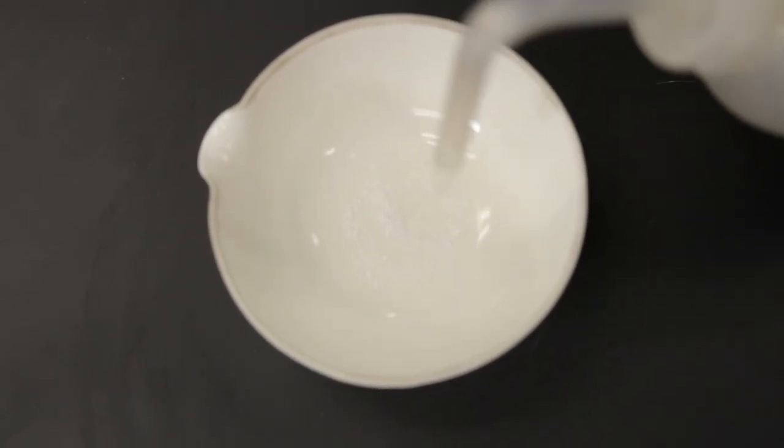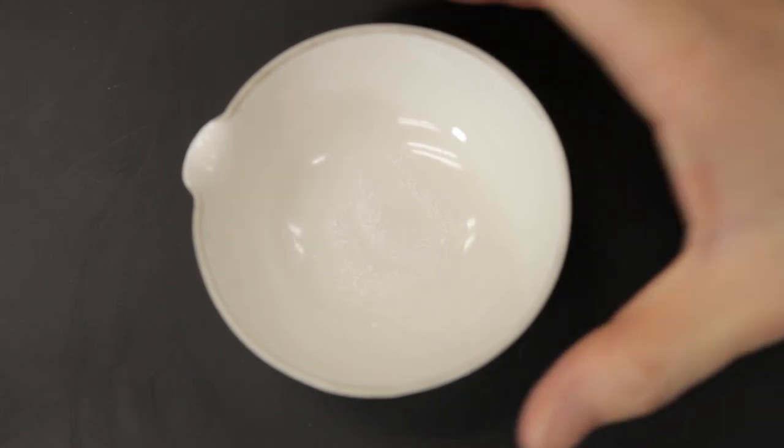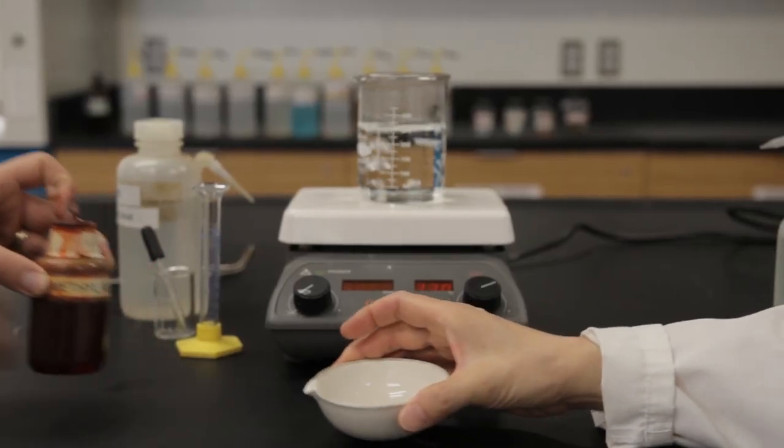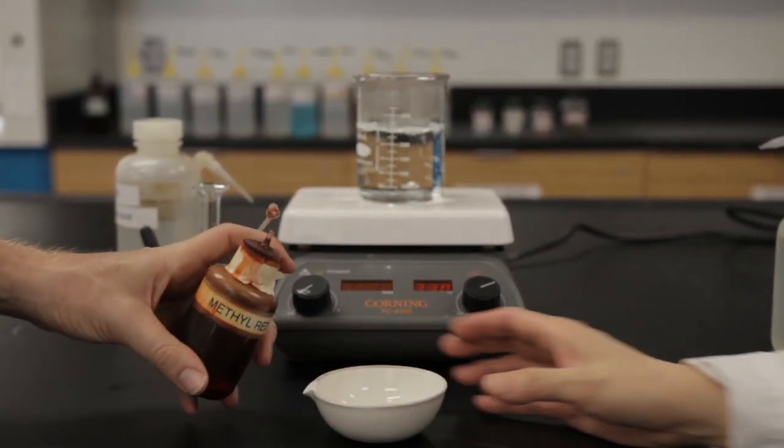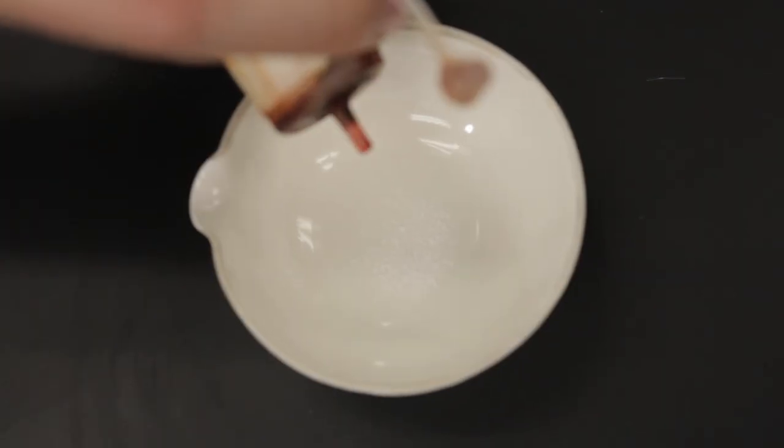Add distilled water dropwise to the sodium carbonate just until the salt is moistened. Then add four drops of the methyl red indicator. The solution will turn yellow.